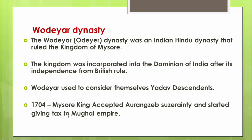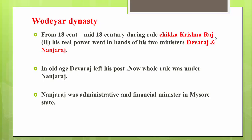From the early to mid-18th century, the ruler was Chika Krishna Raj, but he was a mere puppet in the hands of his ministers Devaraj and Nanjaraj. They overtook the whole control of the empire, and during Chika Krishna Raj's old age, Devaraj left his post and the whole rule came under Nanjaraj, who was the administrative and financial minister of Mysore state.